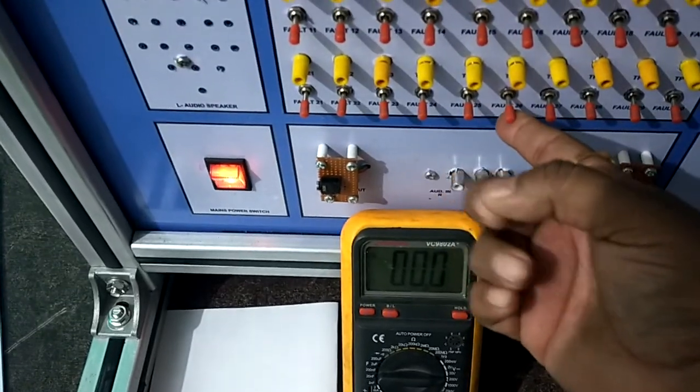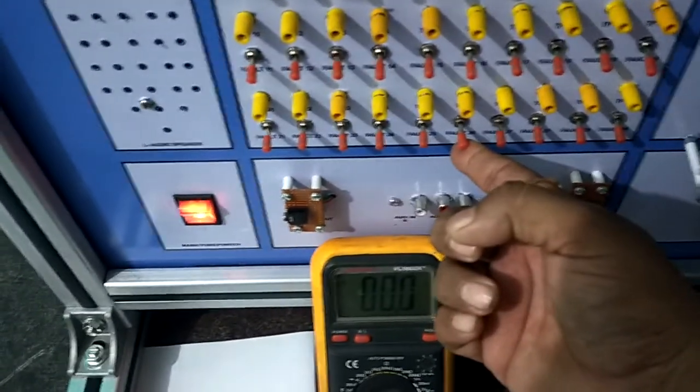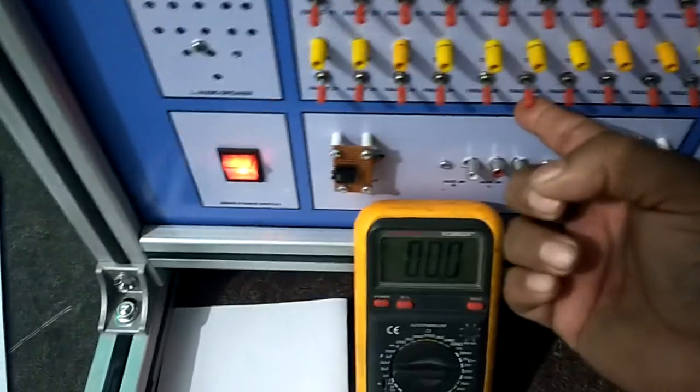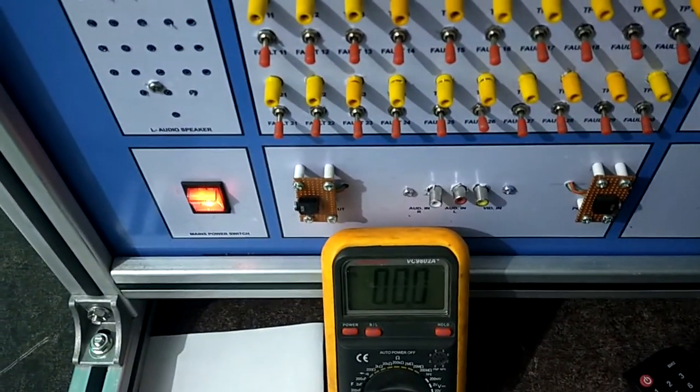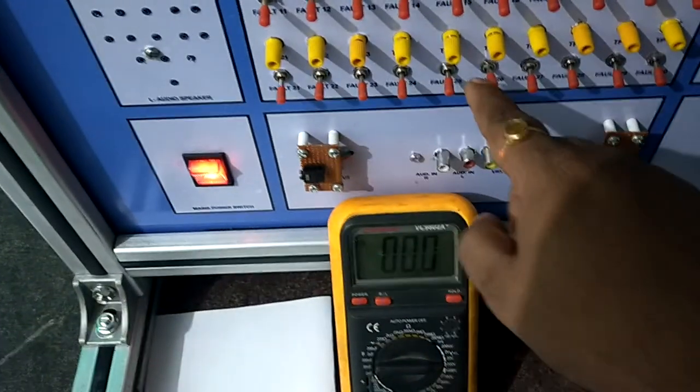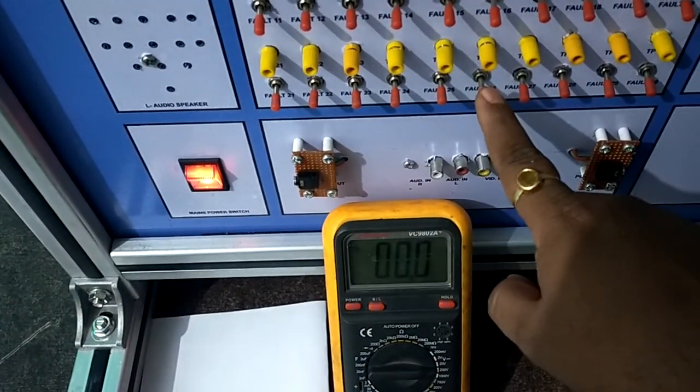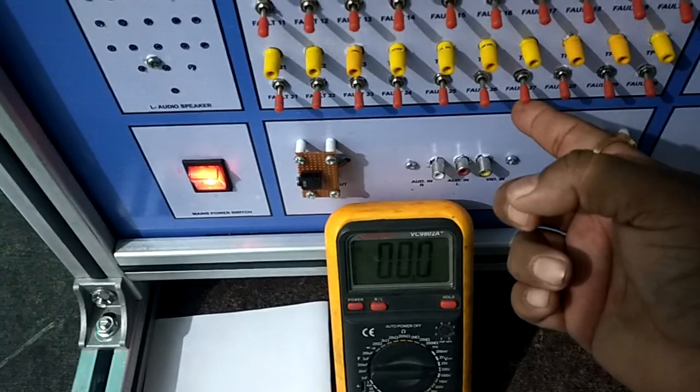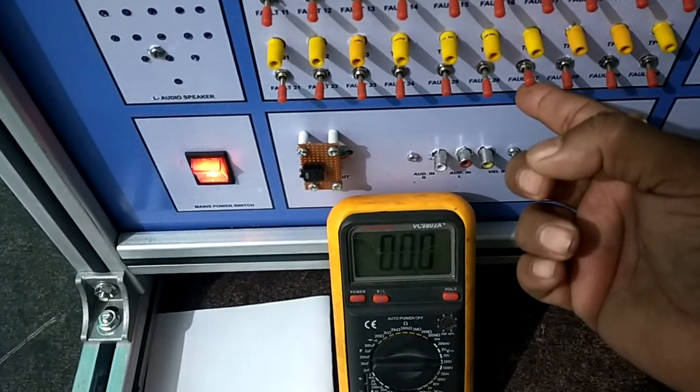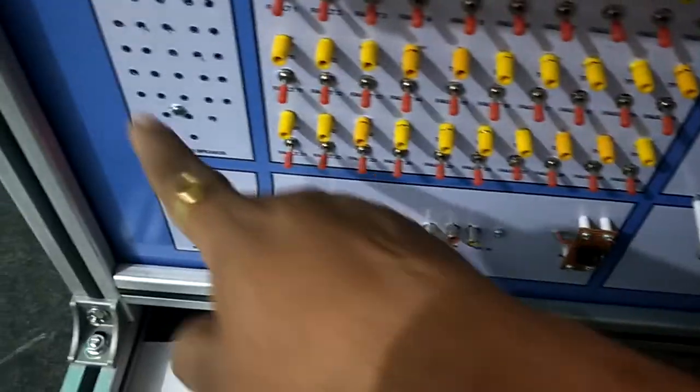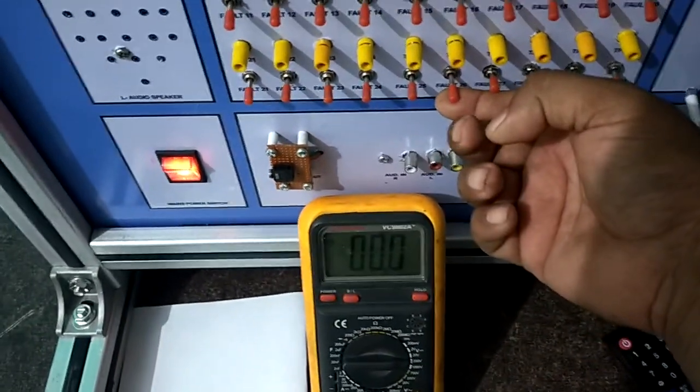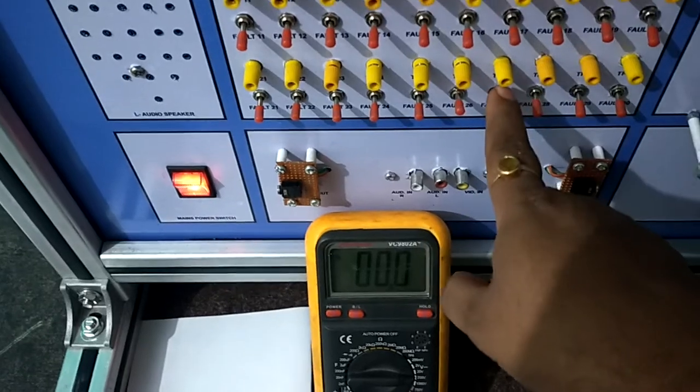So if I put out any switch, the speaker volume from that side will be gone. See, this speaker is gone down and this speaker is working. Now I put this speaker off, this speaker is working and this is not working. And if I push out both switches, both speakers are down.